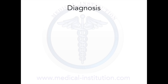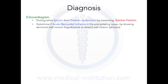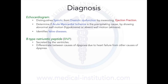To diagnose congestive heart failure we can use echocardiogram, which distinguishes systolic from diastolic dysfunction by measuring the ejection fraction. It can also determine if acute myocardial ischemia is causing heart failure by showing abnormal wall motions, as well as identifying any valvular diseases. We can also measure B-type natriuretic peptide or BNP, which is secreted by the ventricles in response to excessive stretching of the heart muscle cells, and can differentiate causes of dyspnea due to heart failure from other causes of dyspnea.